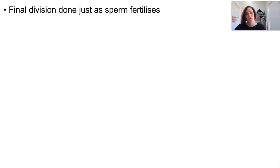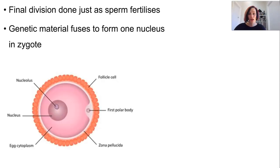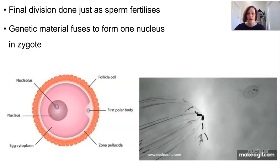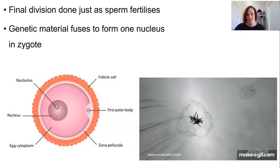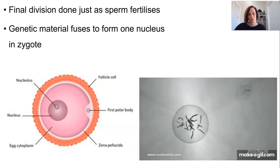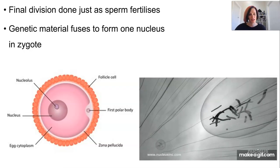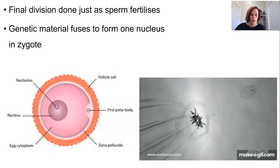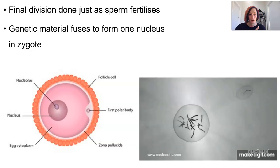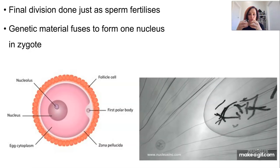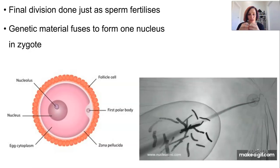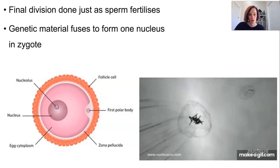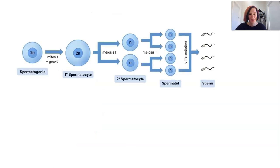The second meiotic division finishes just in time for the sperm's genetic material to fuse with the egg's chromosomes. When one nucleus is created, a new nuclear membrane is also created, and those two haploid nuclei come together to form one diploid zygote nucleus.